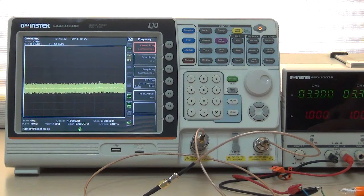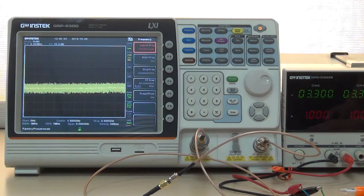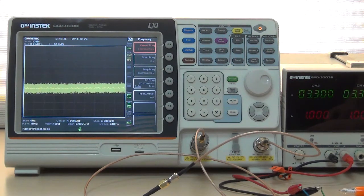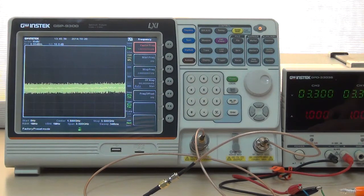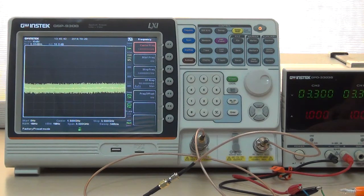Before using Scalar Network Analysis function, users must conduct normalization to remove the interference of attenuator, SMA RF cable, and adapter.